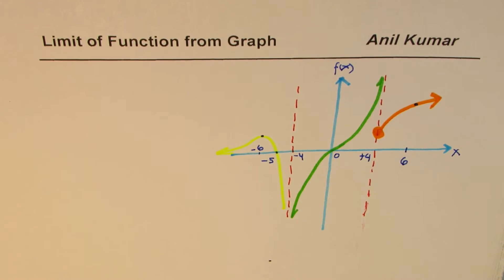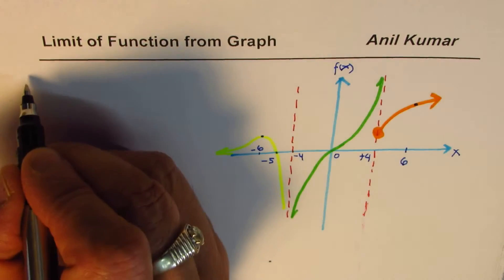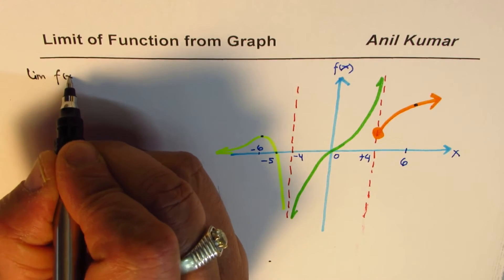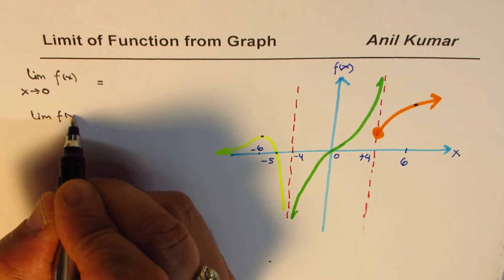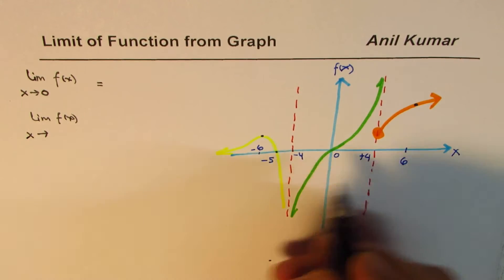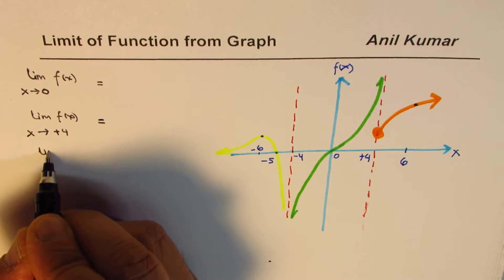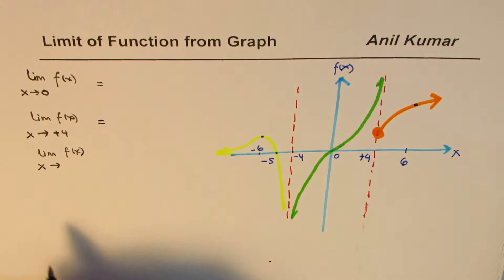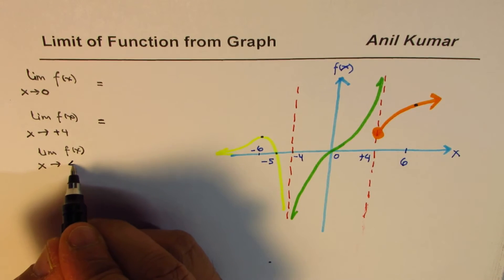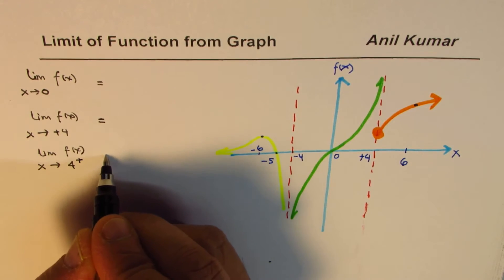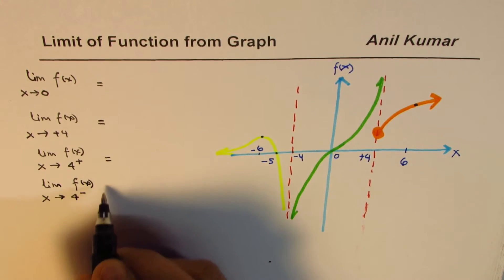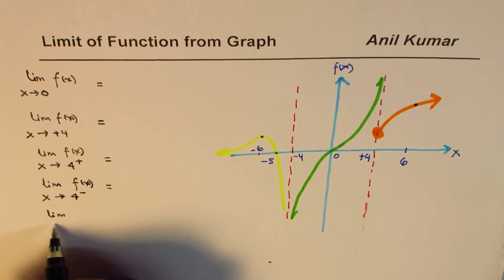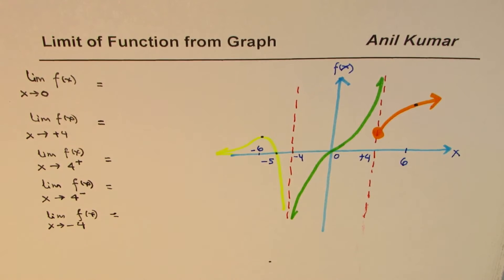Let me write down the questions and you may start writing answers. Find the limit of f(x) as x approaches 0 — that is the first question. Then find the limit of f(x) as x approaches plus 4. Then find the limit of f(x) as x approaches 4 from the right side, and also the limit as x approaches 4 from the left side. Finally, find the limit as x approaches minus 4.